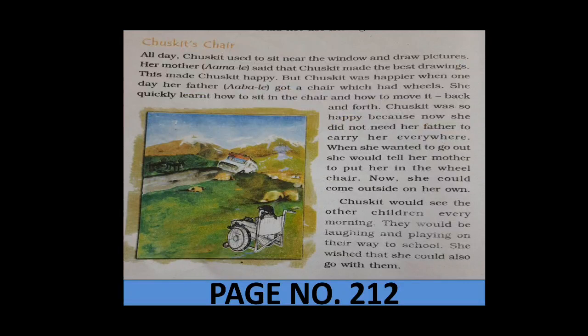Chuskit's Chair. All day, Chuskit used to sit near the window and draw pictures. Her mother, Amalie, said that Chuskit made the best drawings. This made Chuskit happy. But Chuskit was happier when one day her father, Abale, got a chair which had wheels. She quickly learnt how to sit in the chair and how to move it back and forth. Chuskit was so happy because now she did not need her father to carry her everywhere. When she wanted to go out, she would tell her mother to put her in the wheelchair. Now she could come outside on her own. Chuskit would see the other children every morning. They would be laughing and playing on their way to school. She wished that she could also go with them.